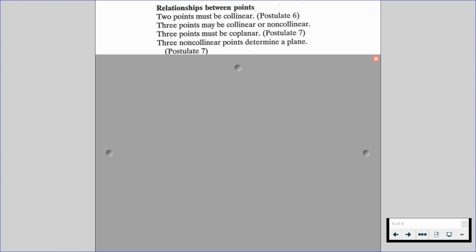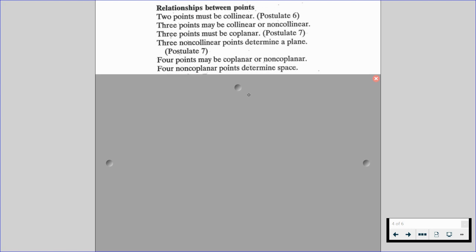Three non-collinear points determine a plane. Four points may be coplanar or non-coplanar. Four non-coplanar points determine a space. Space contains at least four non-coplanar points.